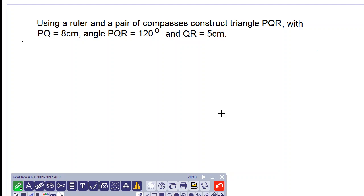Good day everyone. Let us construct this triangle using a ruler and a pair of compasses. We are given the dimensions PQ is 8 centimeters, angle PQR 120 degrees, and QR 5 centimeters.